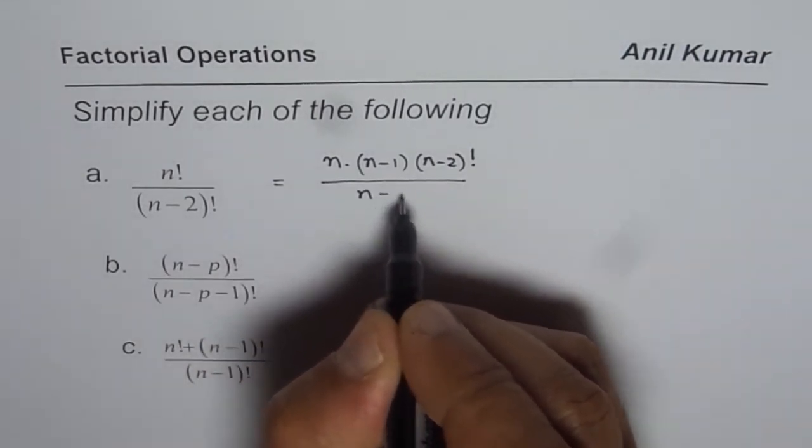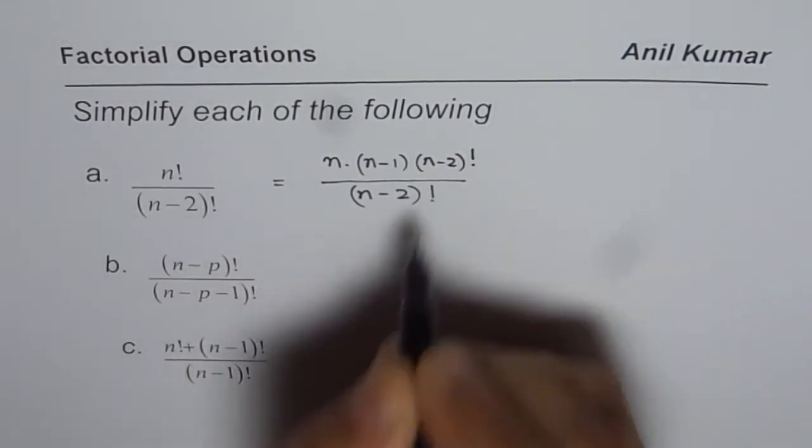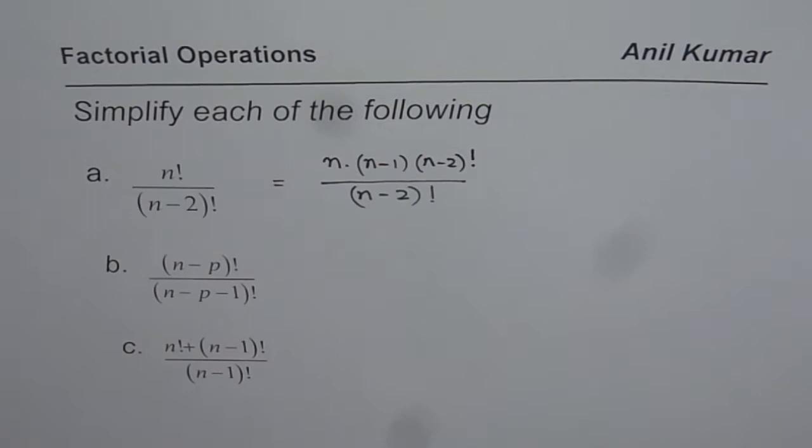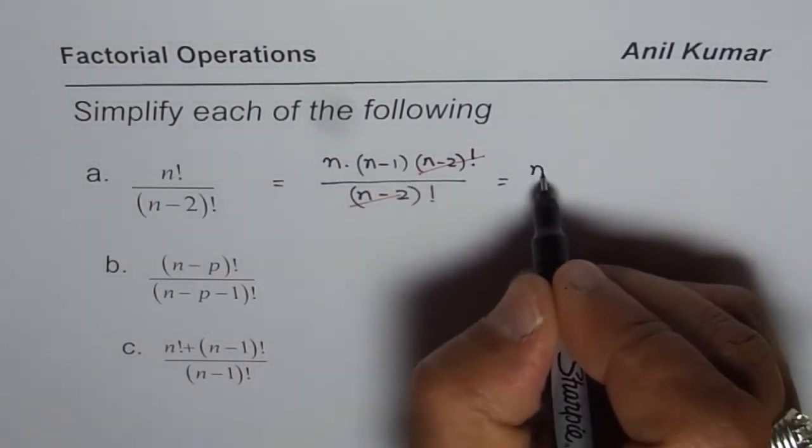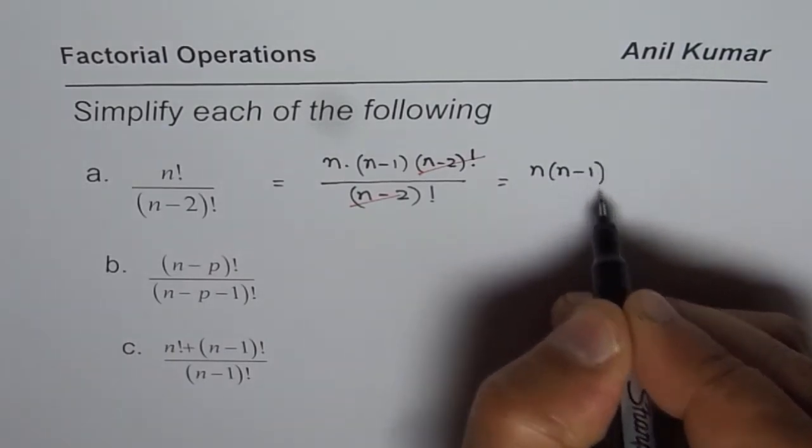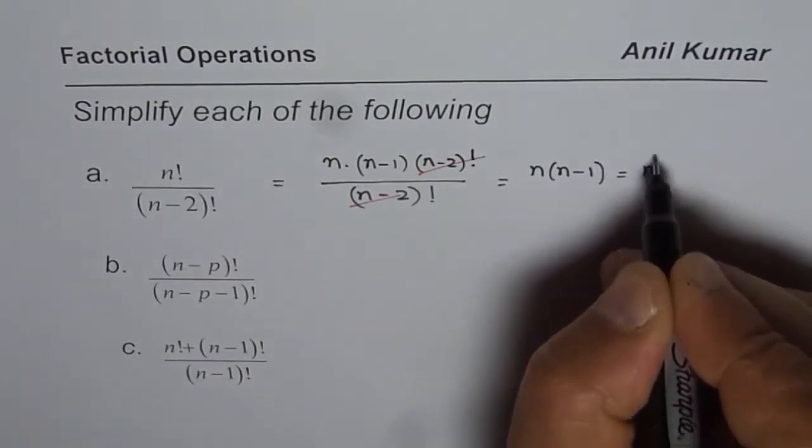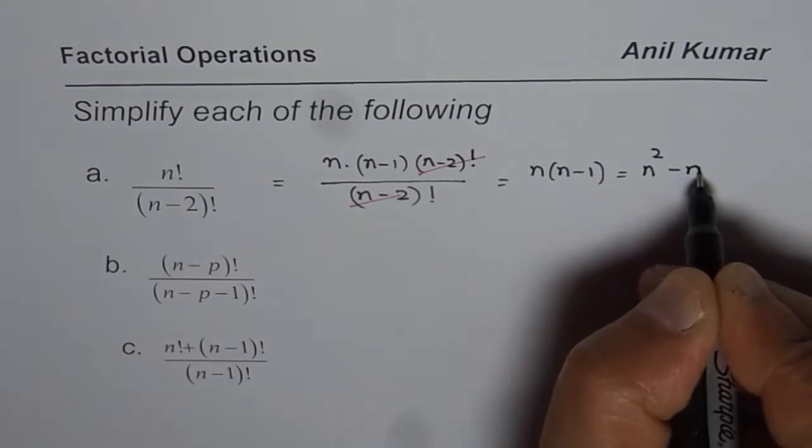Denominator is n minus 2 factorial and you can clearly see n minus 2 factorial cancels out. So we are left with n times n minus 1. You can multiply and write your answer as n squared minus n also.